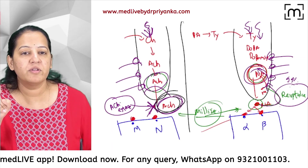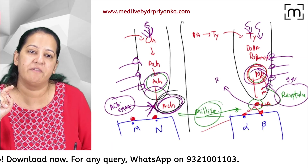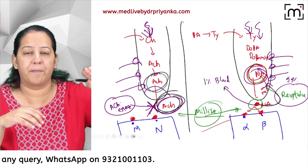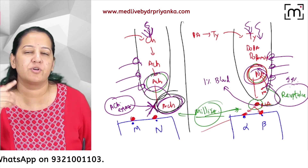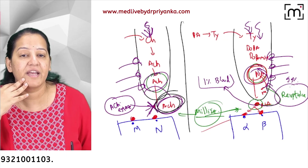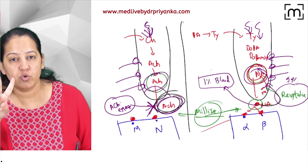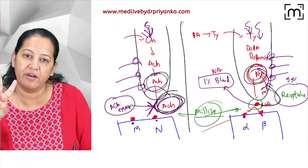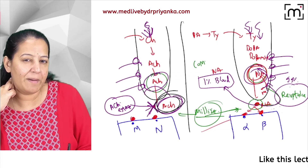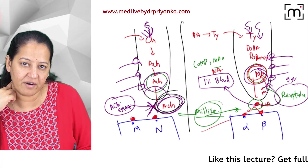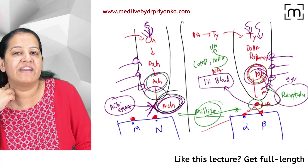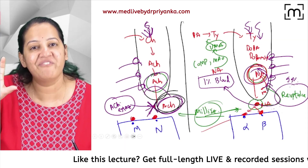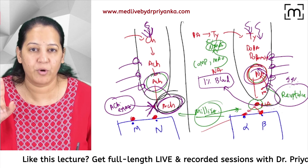The remaining 1% — the minor portion — moves into the blood. In the blood, two enzymes act on this noradrenaline: COMT and MAO. These enzymes convert noradrenaline into VMA — vanillylmandelic acid — which is then excreted in the urine as the end metabolite.